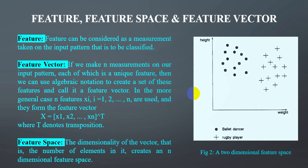In computer vision there are a large number of possible features such as edges and objects. The feature vector is the sequence of features represented as a d-dimensional column vector. If we make n measurements on input patterns, each being a unique feature, we can use algebraic notation to create a set of these features called a feature vector, where T denotes transposition. In pattern recognition, a feature space is an abstract space where each pattern sample is represented as a point in n-dimensional space; its dimension is determined by the number of features used to describe the patterns. The example described previously is a two-dimensional feature space.